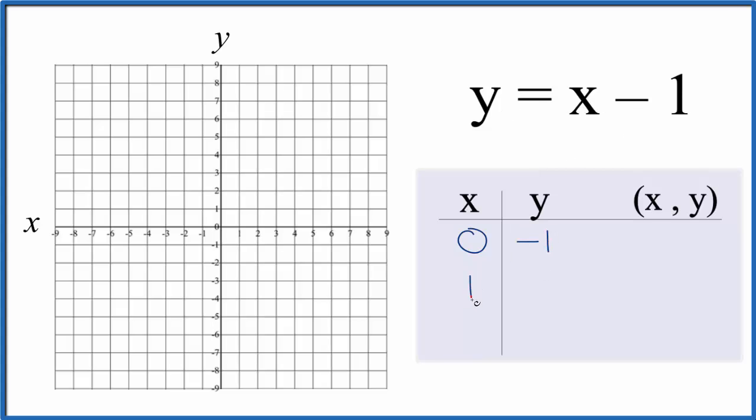How about x is 1? 1 and negative 1, that gives us 0. And let's use negative 1 here. Negative 1 and negative 1, that's negative 2.